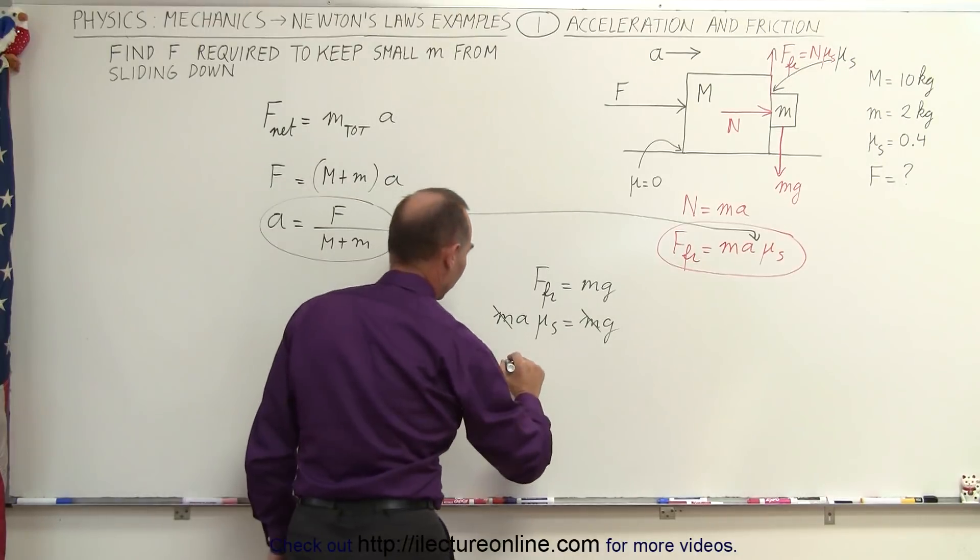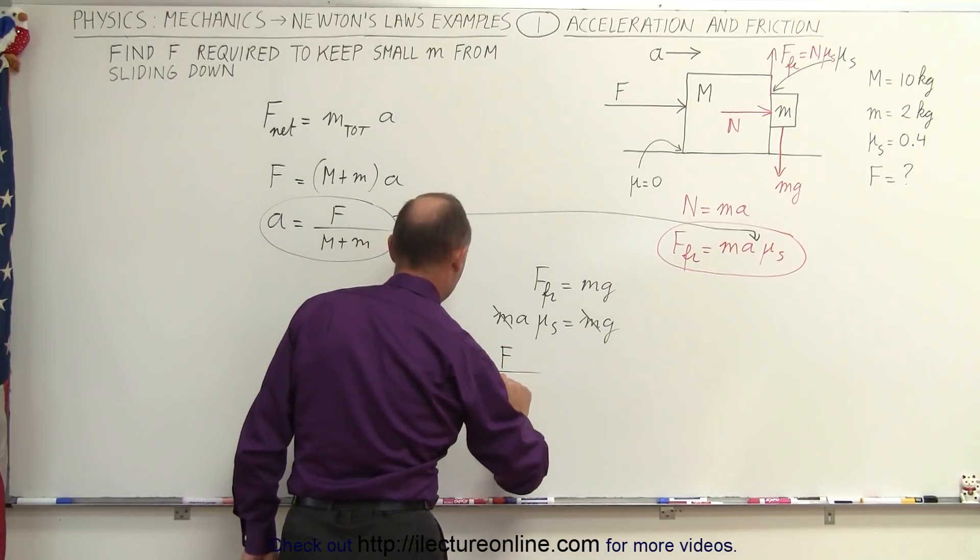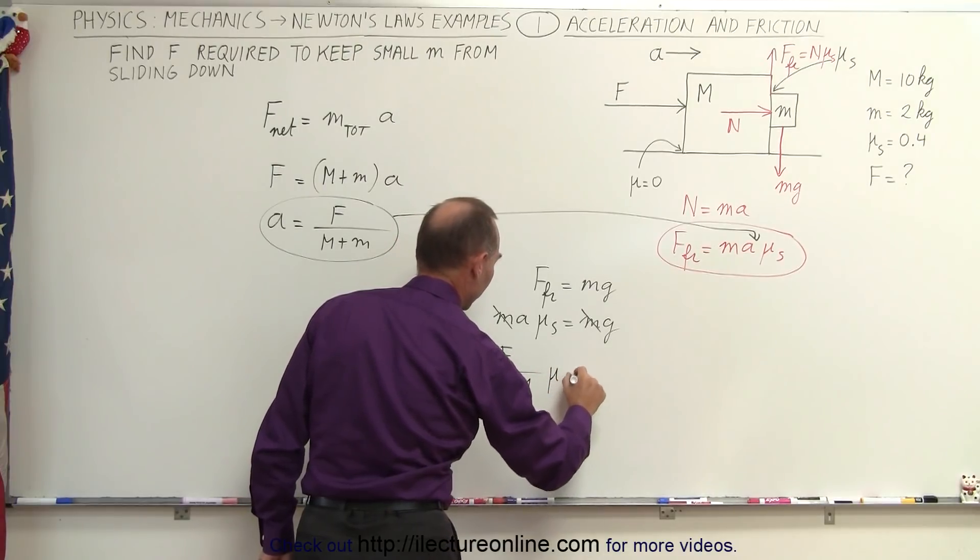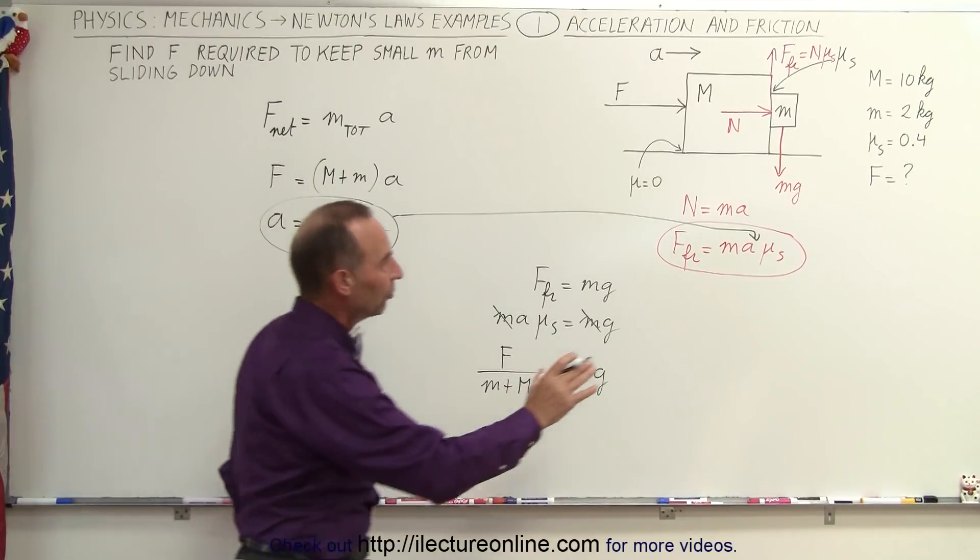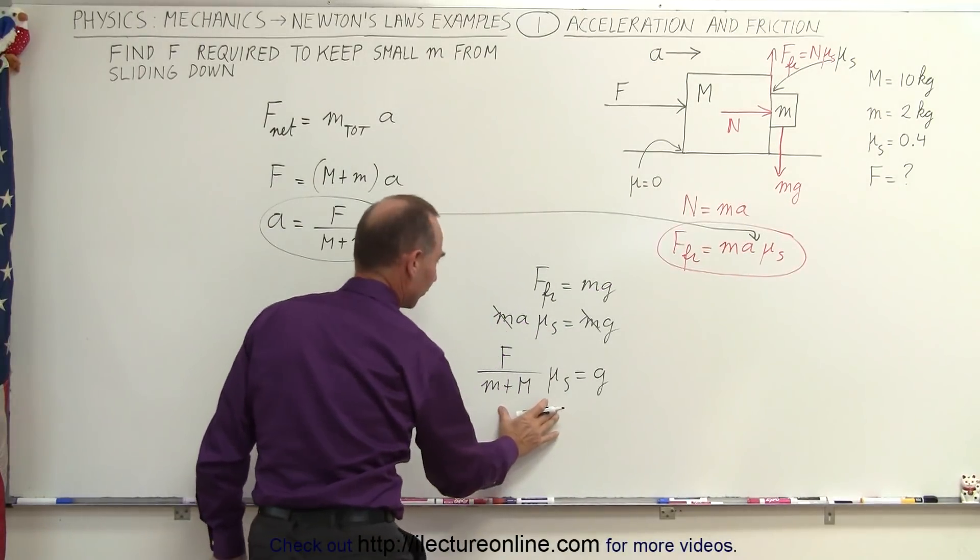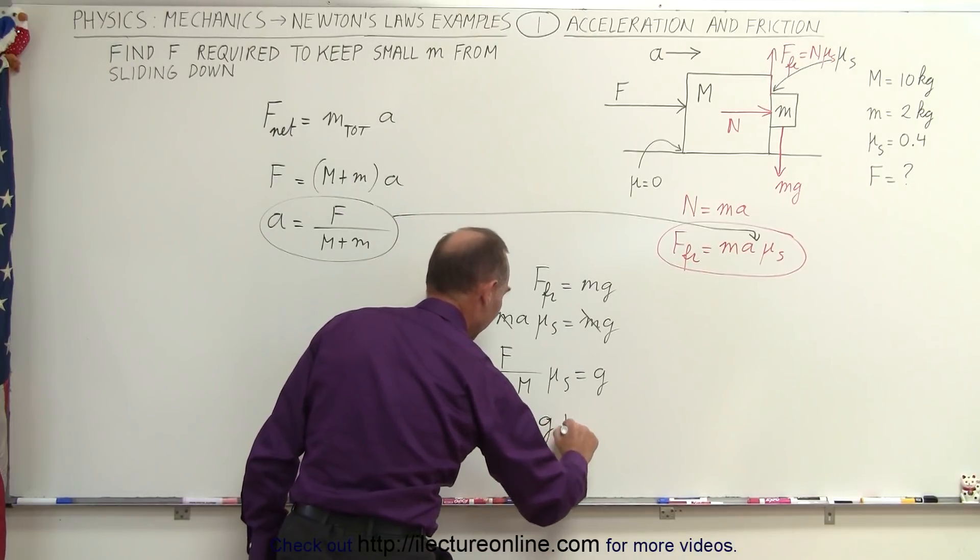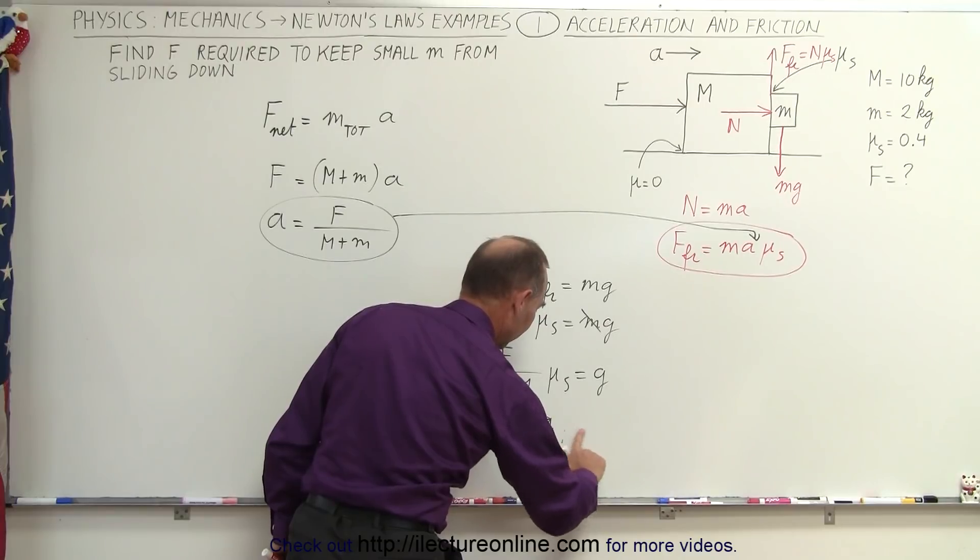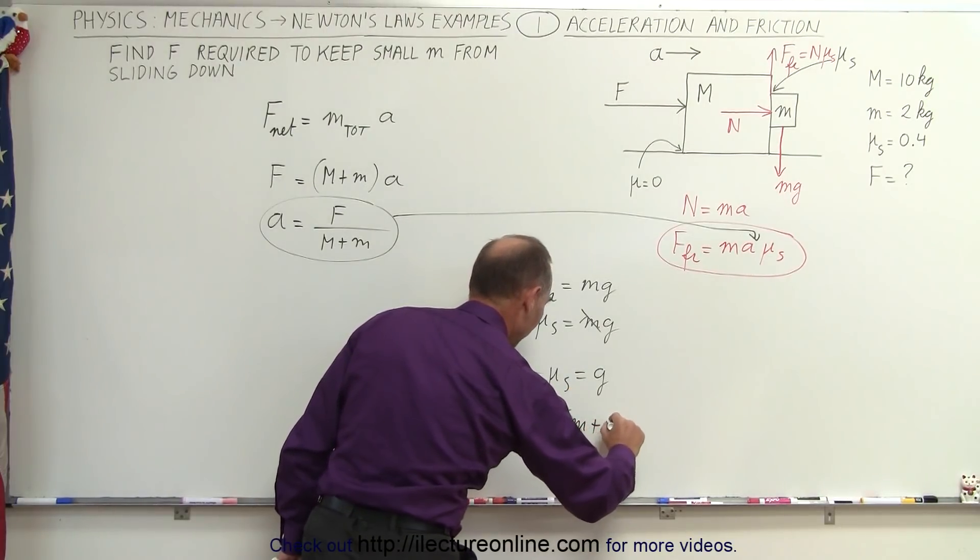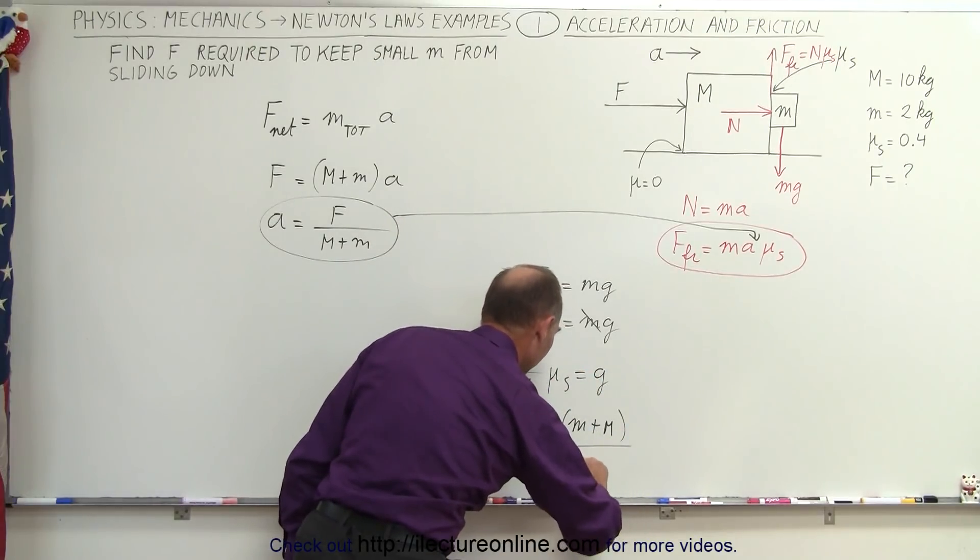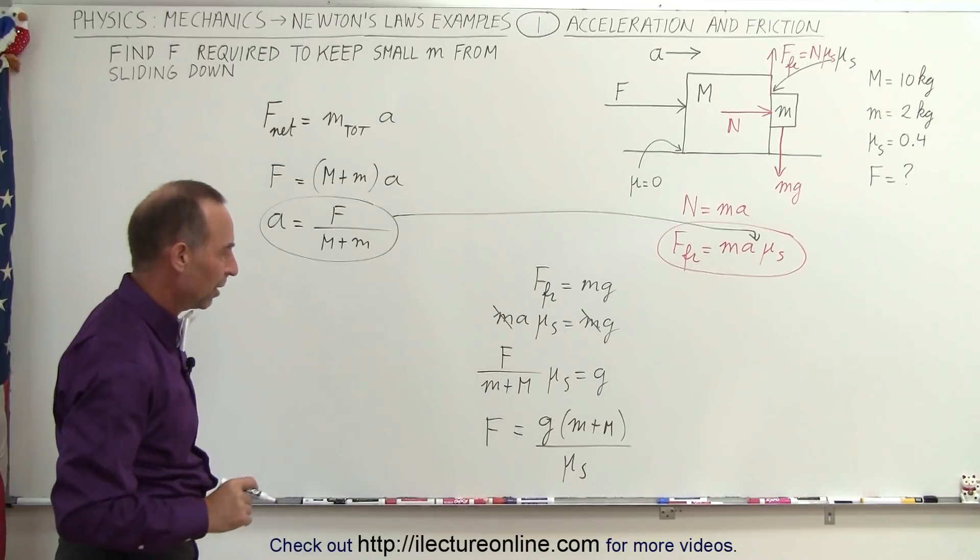And now for a, we can then replace that. And so we have F divided by m plus big M times mu sub s is equal to g. And since we're looking for the force, the force required, we then solve this equation for F. So we say that F is equal to g times the masses, m plus M, because I have to cross multiply, divided by mu sub s. And that's the force required to keep the small block from sliding.